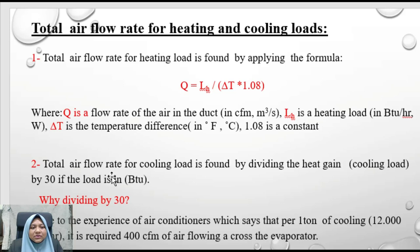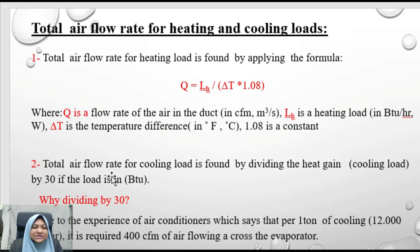The airflow rate for a heating load can be found by applying the formula: Q = LH / (ΔT × 1.08), where Q is the flow rate of air in the duct in CFM (or cubic meters per second), LH is the heating load in BTU per hour (or watts in SI), ΔT is the temperature difference in degrees Fahrenheit (or Celsius), and 1.08 is a constant. This formula is proven and is used for heating load, not cooling load.